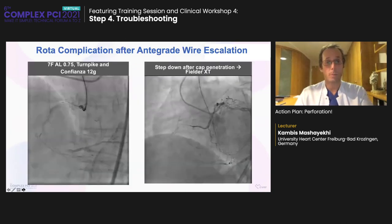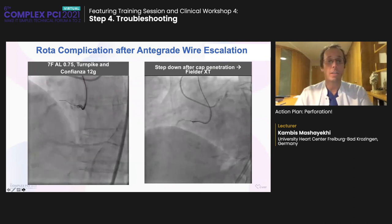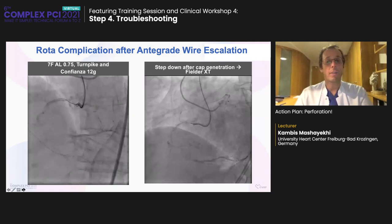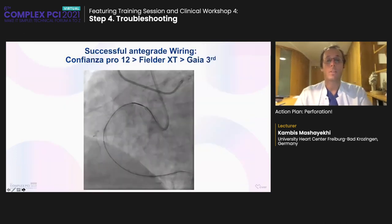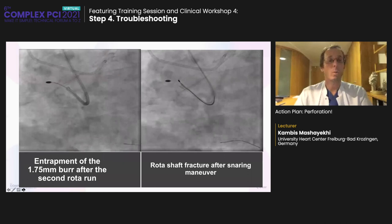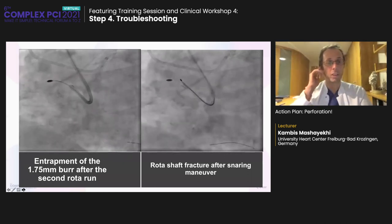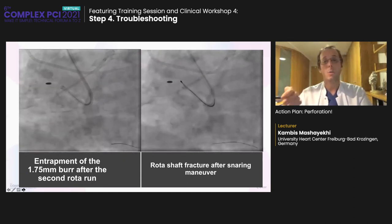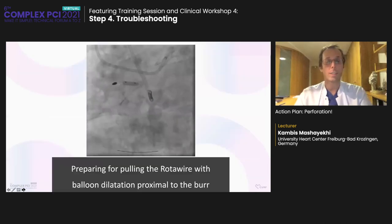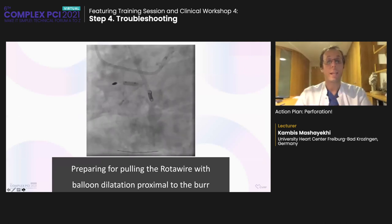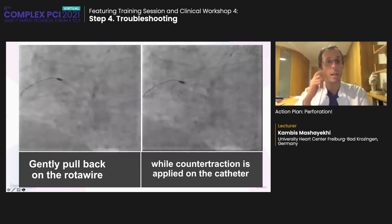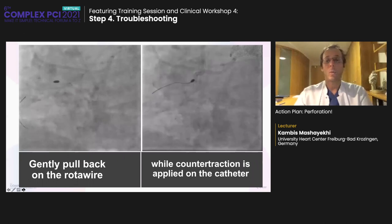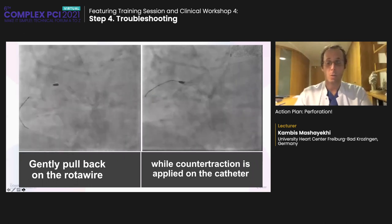Now about vessel rupture — here is a CTO case, an ostial RCA CTO. The wire was very calcified so I hit the puncture. Finally I passed through but it was uncrossable, so rotablation was done and a 1.75 burr got entrapped. I tried to bring the burr out with a snare — it didn't work. The shaft was also broken. I prepared with balloon dilatation before pulling out the rota wire with the burr. This was successful — I gently pulled out the wire and brought the burr into the catheter.